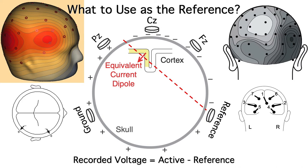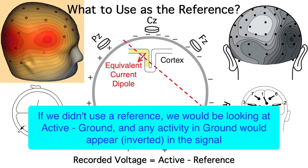So why do we bother using a reference? As I mentioned before, a reference electrode reduces noise in the recordings. And if we eliminated the reference, we'd still be looking at the difference between active and ground, and any activity at the ground electrode would be inverted in our signal.